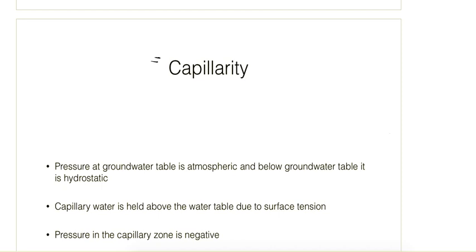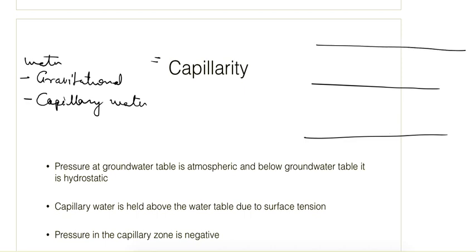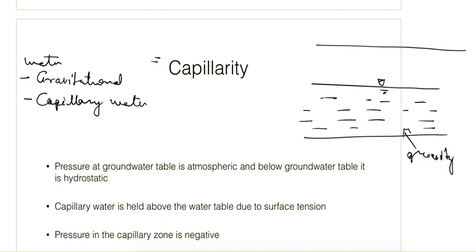The next part is capillarity in soils. Water in soils is held in two sets: first is the gravitational water and second is the capillary water. If there is a soil mass, the water table is here, and below the water table the water exists in the soil due to the force of gravity. This water is known as gravitational water, or also as phreatic water, because the top surface of the water table is subject to atmospheric pressure.